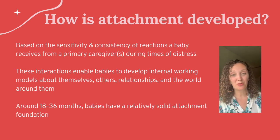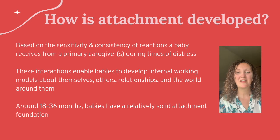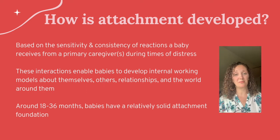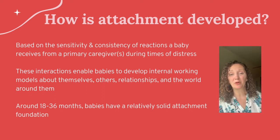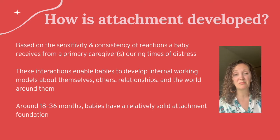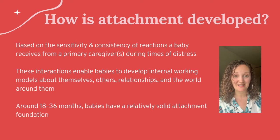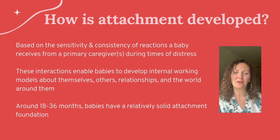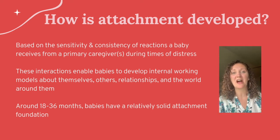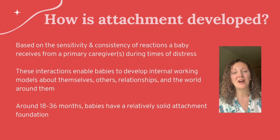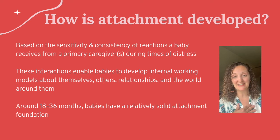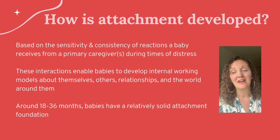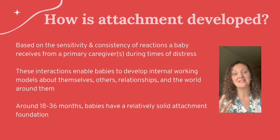That baby develops internal working models in their brain that tell them: adults are trustworthy, if I need an adult they'll be there for me, I'm a pretty good person, other people are pretty good people, relationships seem pretty worthwhile, the world is a great place to be. Internal working models tell us how to view ourselves, how to view others, how to view relationships, and how to view the world around us. We want to create human beings who view themselves positively, view other people positively, view relationships as valuable, and view the world as a happy, safe place to be.